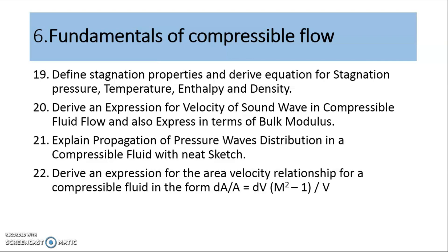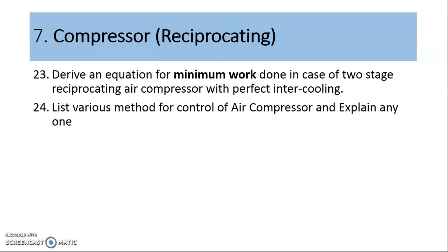Unit 7 comprises three different topics: reciprocating compressors, centrifugal compressors, and axial flow compressors. From reciprocating compressors, two main important questions are: first, derive the equation for minimum work done in a two-stage reciprocating air compressor with perfect intercooling; and second, the various methods of control of an air compressor and explain any one of them.